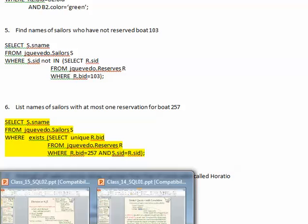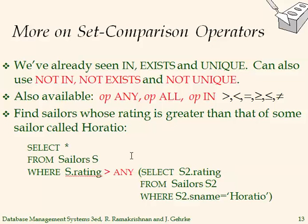There are other set comparison operators that are useful. For example, we can compare a rating with ANY value from a list. Suppose a person's rating is 5 and the list contains 7, 11, and 3 — the rating is greater than 3, so they are selected. ANY can also be changed to ALL, meaning the rating must be greater than every value listed.